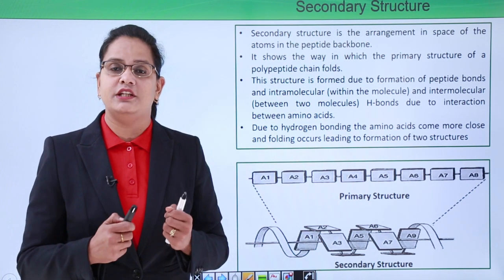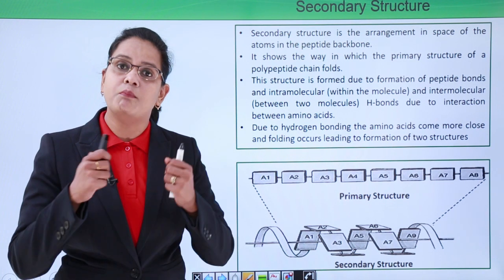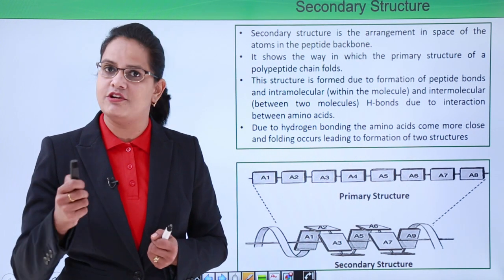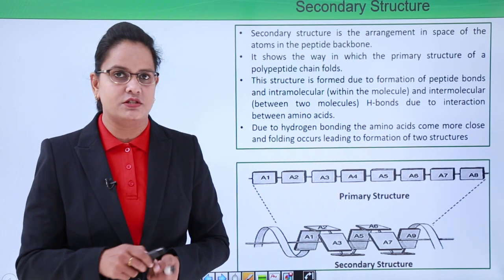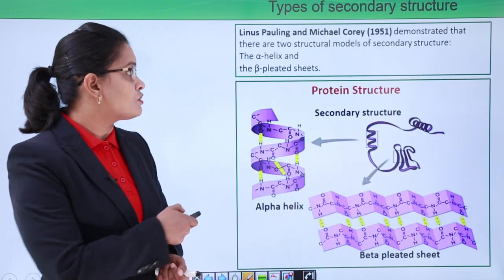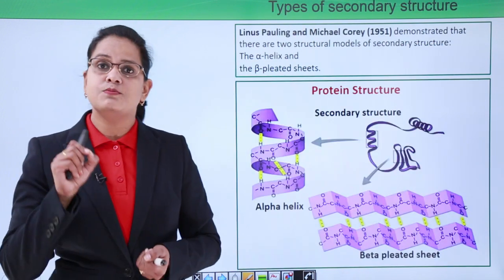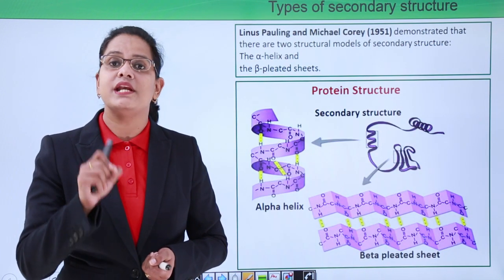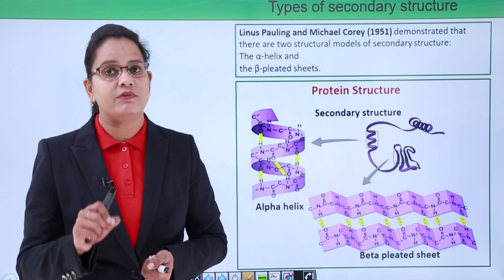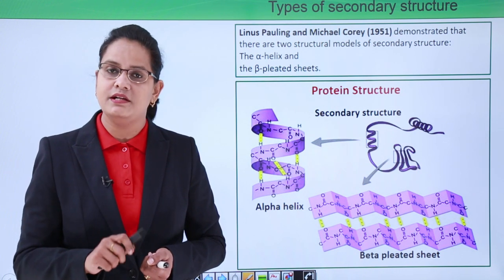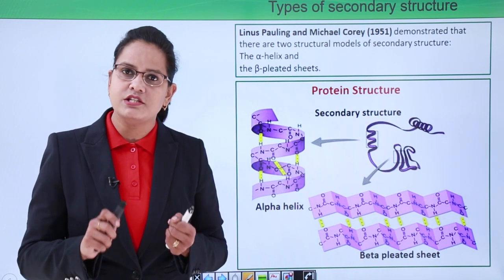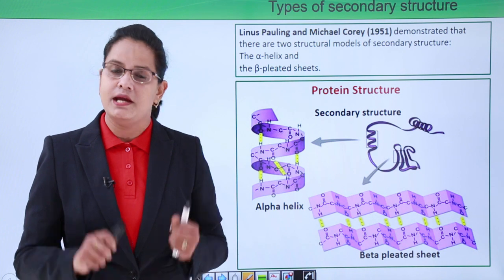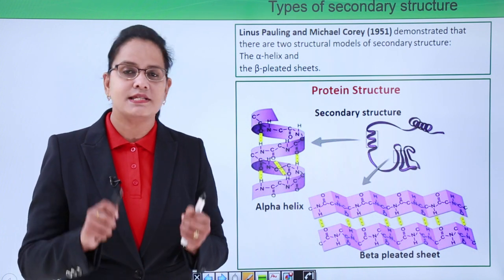Linus Pauling and Michael Corey were the scientists who in 1951 demonstrated that secondary structure can be basically of two types: the alpha helix and the beta pleated sheet.